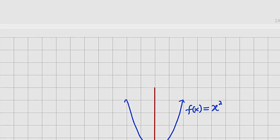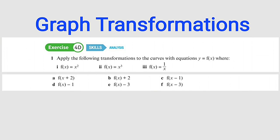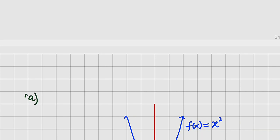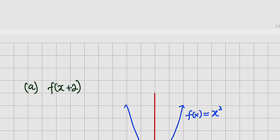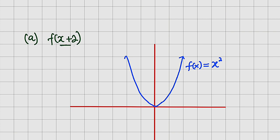For x squared, which is a quadratic graph, I would like to take transformations A and D. Let me take A first, which is f of x plus 2. We have f of x plus 2 — this is going to be a horizontal shift. Remember that when the effect is on the x-axis, the shift will occur along the x-axis. Since f of x is x squared, wherever we have x we replace it with x plus 2, so this gives us x plus 2 whole squared.